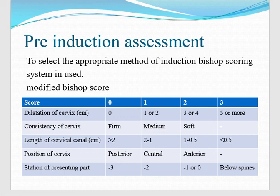Dilatation of the cervix: closed cervix is 0 marks; 1-2 cm dilated is 1 mark; 3-4 cm is 2 marks; 5 or more cm is 3 marks. Consistency of the cervix: firm is 0, medium is 1, soft is 2. Length of the cervix: more than 2 cm is 0 marks; 2-1 cm is 1 mark; less than 1 cm is 3 marks. Position of the cervix: posterior is 0, central is 1, anterior is 2. Station of the presenting part: minus 3 is 0 marks; minus 2 is 1 mark; below the spine is 3 marks.